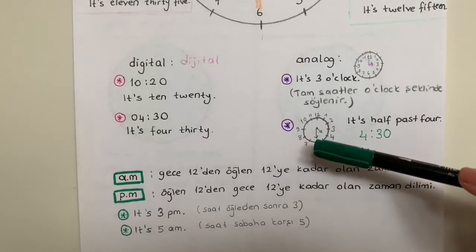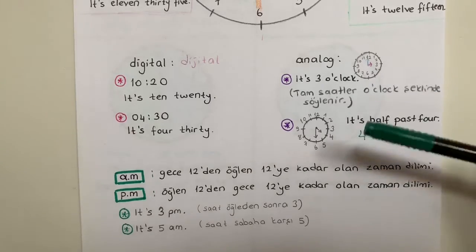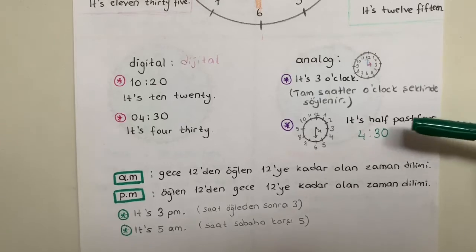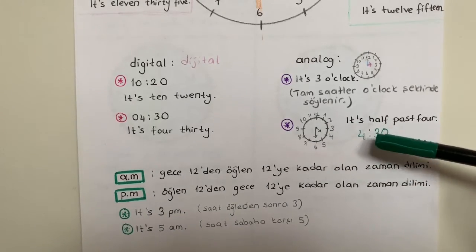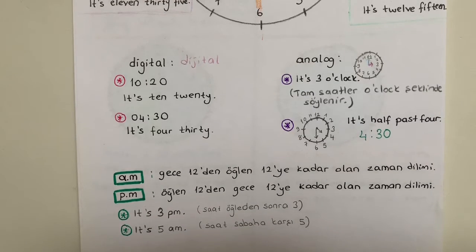Ya da eğer geçeli bir şey söyleyeceksem, ya da kalalı, fark etmez - it's half past four, bu şekilde söyledim. İsterseniz hatırlamak için analog üzerinden önce dijitale çevirip o şekilde de söyleyebilirsiniz. Ayrıca benim bir de AM ve PM olarak kullandığım zaman dilimleri vardı. Bu bizim kültürümüzde olmayan bir şey, çünkü biz 24 saat olarak kullanıyoruz, ama bazı